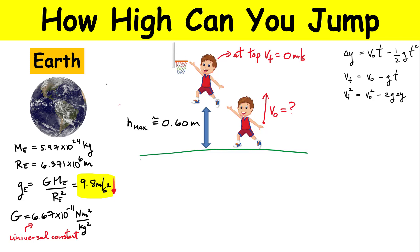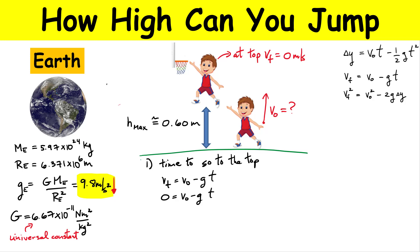We have three kinematic equations. Let's find how much time it takes to go to the top. Using the fact that my final velocity is zero and the equation V-final equals V-initial minus little g times t — if I set this equal to zero, the time to go to the top is simply V-naught divided by little g.